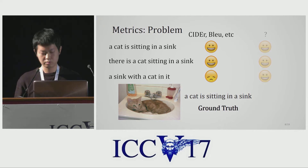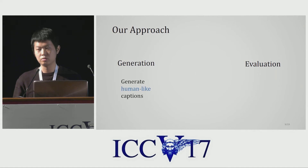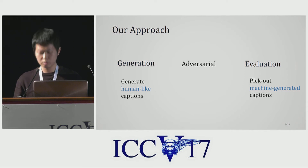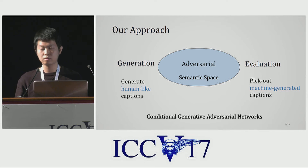To solve that, we review the goals of caption generation and evaluation. Generation is to produce captions that are as human-like as possible, and evaluation is to pick out bad machine-generated captions. In fact, they are in an adversarial relationship — and more importantly, this relationship is in a semantic space, which is exactly what we need.